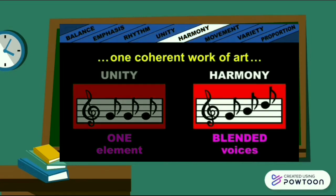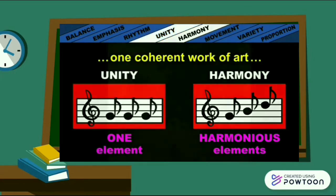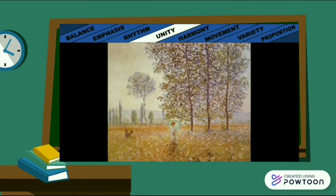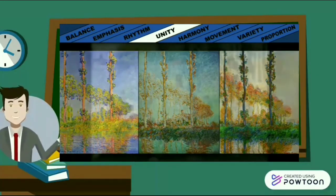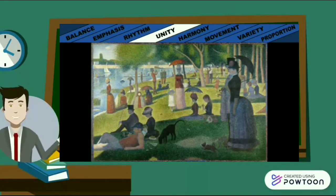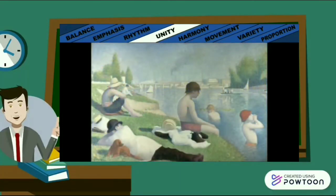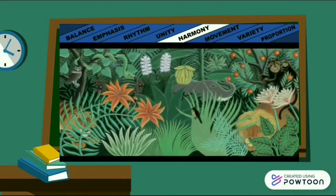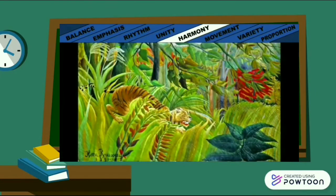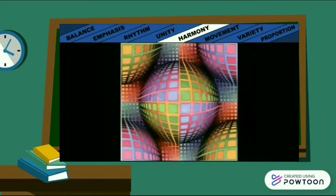The principle of harmony can be compared to singers blending their voices with notes that are different but compatible. An artist could achieve harmony by using a family of colours that are different but compatible throughout a work of art. Claude Monet achieved unity in his poplar tree paintings through strategic colour, repeating the same colour from the sky at the top into the water at the bottom. Georges Seurat achieved unity through pointillism — tiny dabs of paint used throughout his artwork. Henri Rousseau and Victor Vasarely both achieved harmony by using similar and compatible colours and shapes throughout their artwork.